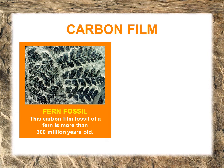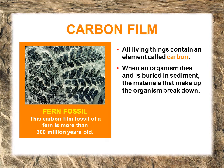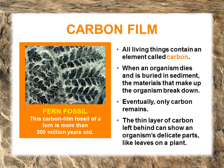The third kind is carbon film. All organisms contain carbon. When an organism dies and is buried, all parts of it break down except the carbon. This can show delicate parts of organisms like leaves. Leaves normally break down much quicker than bones, but can still leave an imprint of the organism in the rock layers.